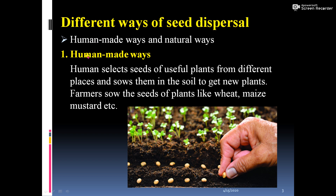Humans select seeds of useful plants from different places and sow them in the soil to get new plants. Farmers sow the seeds of plants like wheat, maize, mustard, etc. You can see in this picture how seeds are sown in the field. The farmer uses seeds for sowing and they germinate to form new plants. This is the way in which humans are responsible for the dispersal of seeds.